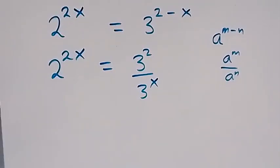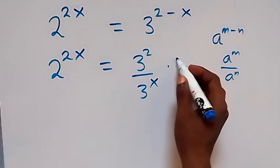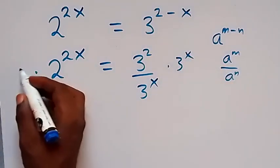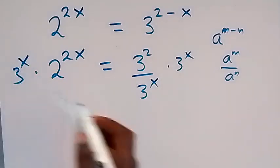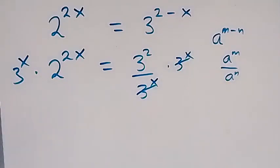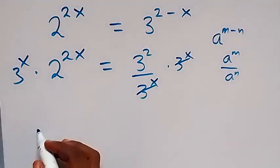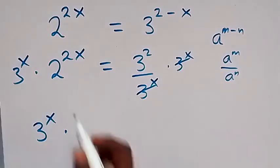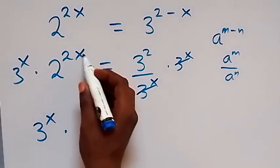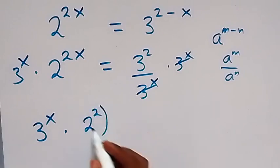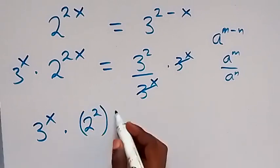From here we can multiply both sides by 3 raised to power x. Then we have 3 raised to power x times — we can separate this power — and we have 2 squared raised to power x.